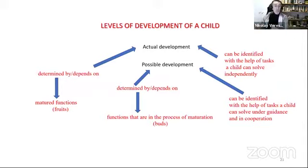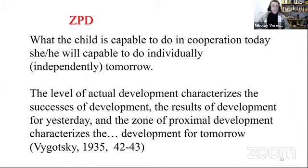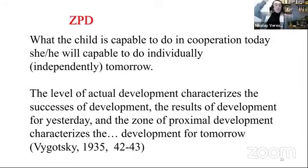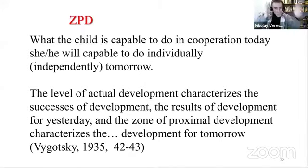You see how far we have come from our two-minute video about a teacher just copy-pasting. That was nothing about intellectual functions at the fruits stage. The level of actual development characterizes the successes of development — the results of yesterday. The zone of proximal development characterizes the development of tomorrow. If I want my obuchenie to be successful and productive, I have to focus it on the zone of proximal development, because by doing so I support the child's development for tomorrow — I build a perspective for the child.